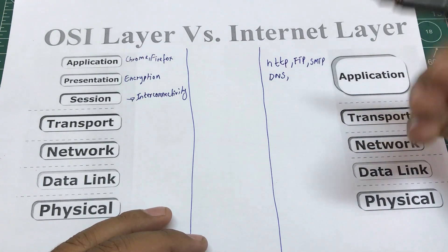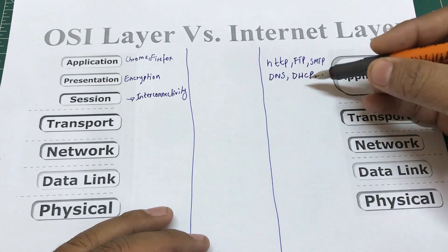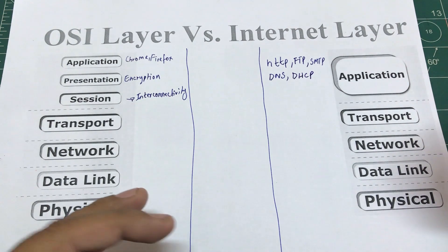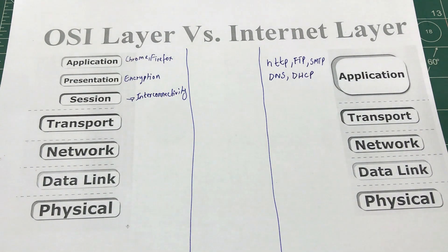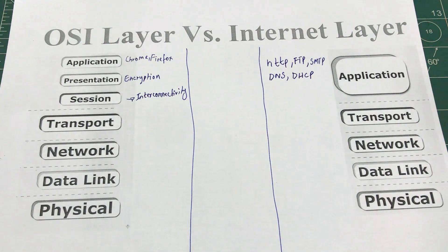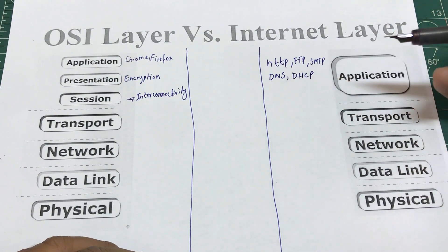Another back-end application layer protocol is DHCP — Dynamic Host Configuration Protocol. Every time you connect to a new Wi-Fi network or plug in your RJ45 cable, DHCP automatically assigns you an IP address from a pool of IP addresses. It runs in the background, dynamically assigning your IP address before you even open a browser.